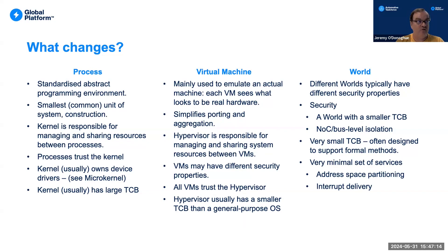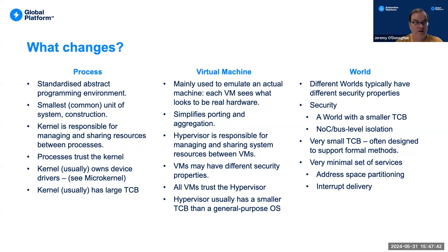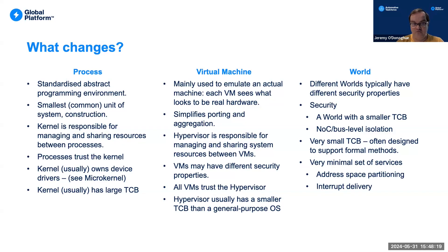Let's summarize the abstractions we can use for isolation. We start with the process — a standardized, abstract programming environment, essentially the C standard library plus Linux syscalls. The process is the smallest common unit of system construction. A kernel has to be trusted and manages shared resources. Virtual machines emulate actual machine hardware, making one piece of hardware appear as several, simplifying porting and aggregation. Hypervisors, because they are often simpler than general purpose OSes, can have slightly stronger security guarantees.